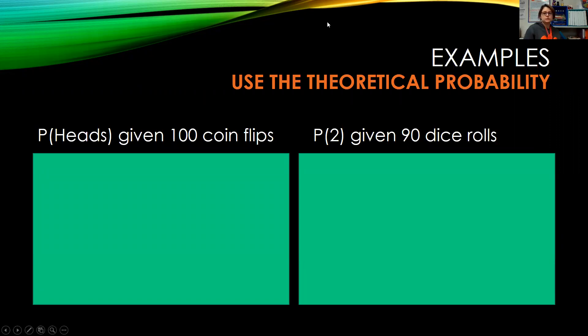The first one we're using theoretical probability, and it says the probability of heads given 100 coin flips. So theoretically, the probability of heads is one out of two. We want to predict, given 100 coin flips, how many times will it land on heads?